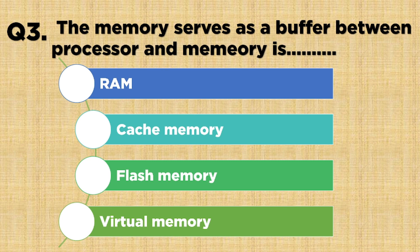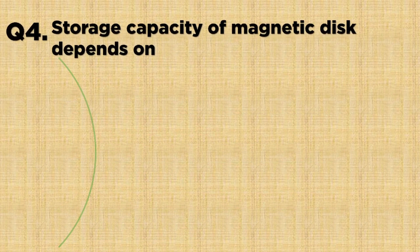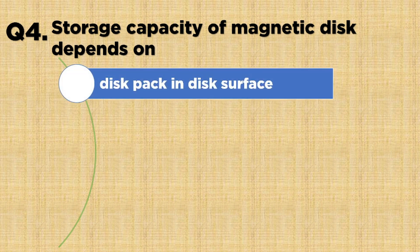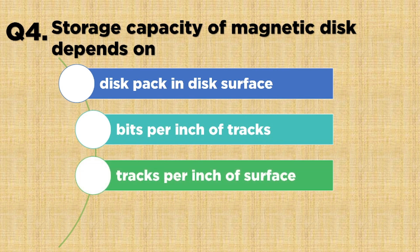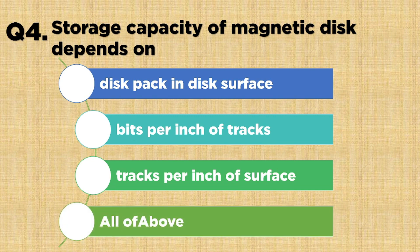Question number four: storage capacity of magnetic disks depends on — Option A: disk pack and disk surface, Option B: bits per inch of tracks, Option C: tracks per inch of surface, Option D: all of the above. The correct answer is Option D: all of the above.